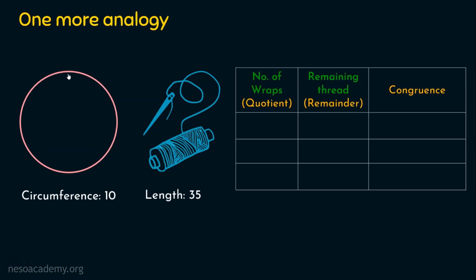Assume I have done it for one time. So I have wrapped around once — how much thread will I have remaining? It's 25 units. Because the circumference of the circle is 10, I have 35 units of thread, and I have done only one wrap-around operation — meaning I placed the thread on the circle only one time. Since the circumference is 10, I will be having 25 units of thread remaining.